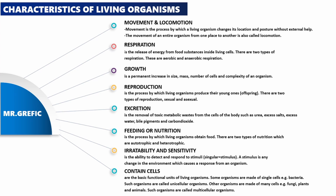Remember, the easiest way to memorize these characteristics is using MR GRAPHIC: M — movement and locomotion; R — respiration; G — growth; R — reproduction; A — actually excretion; F — feeding or nutrition; I — irritability and sensitivity; C — contain cells. Now let's answer some past paper questions on this topic.